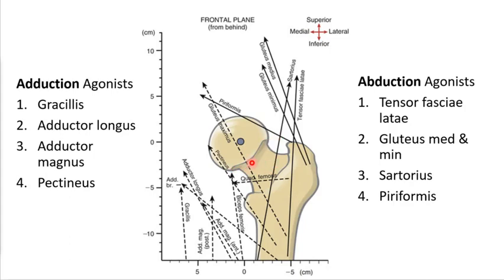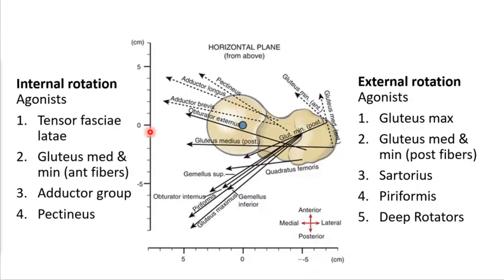In the frontal plane, TFL, glute medius, and glute minimus are your abductors, while the adductors are on the other side. For transverse plane motion, TFL, anterior glute medius, and anterior glute minimus are internal rotators, while the deep external hip rotators and posterior fibers are external rotators. We're predominantly an externally rotating pattern because we're overcoming gravity. Use these slides for studying agonist and antagonist relationships.